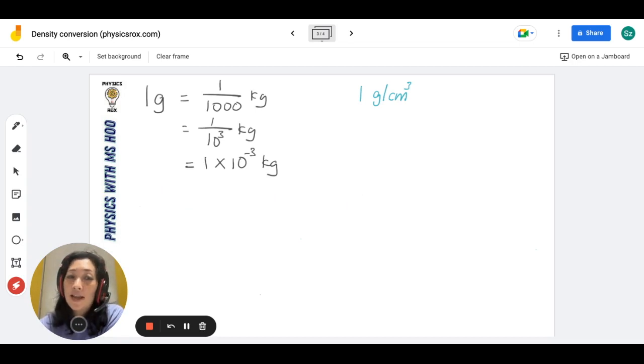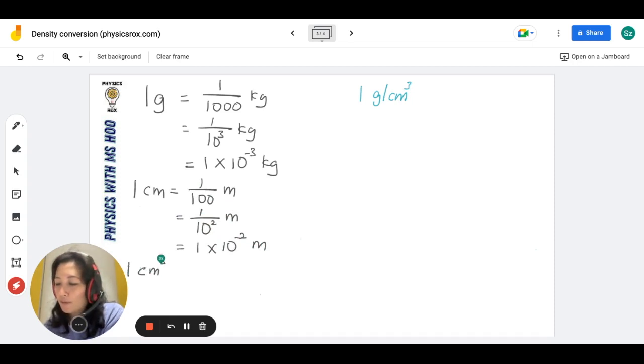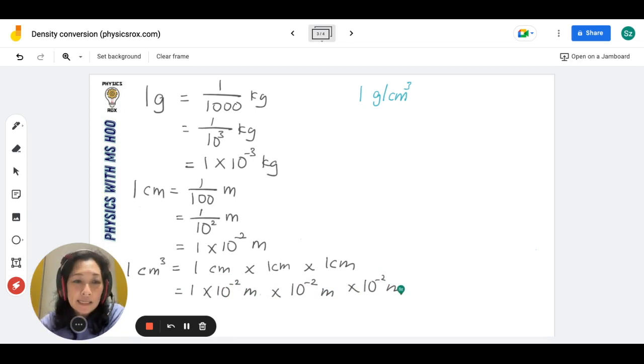Now let's look at cm cube to meter cube. But before we go to that, let's look at 1 cm first. So 1 cm we know is 1 divided by 100 meters. This gives us 1 divided by 10 power of 2 meters, which gives us 1 times 10 to the power of negative 2. So if you have 1 cm cube, this means it's 1 cm times 1 cm times 1 cm. Each 1 cm is equivalent to 1 times 10 to the power of negative 2 meters. So I'm going to keep this simple. We're just going to maintain only the 10 power of negative 2.